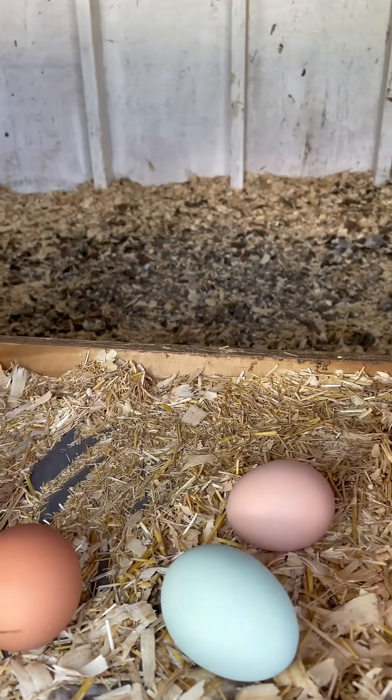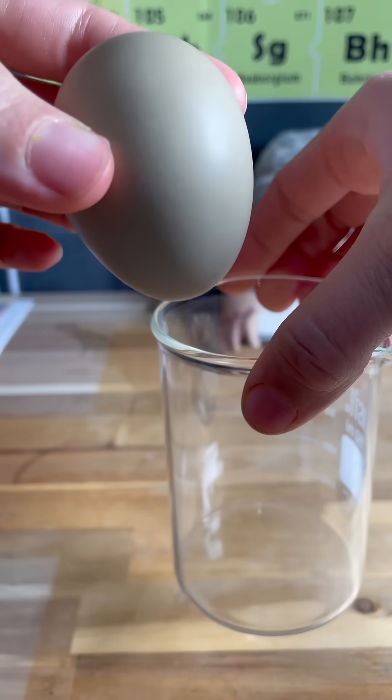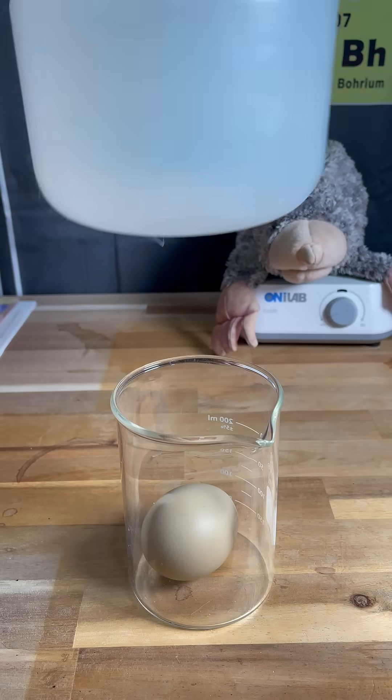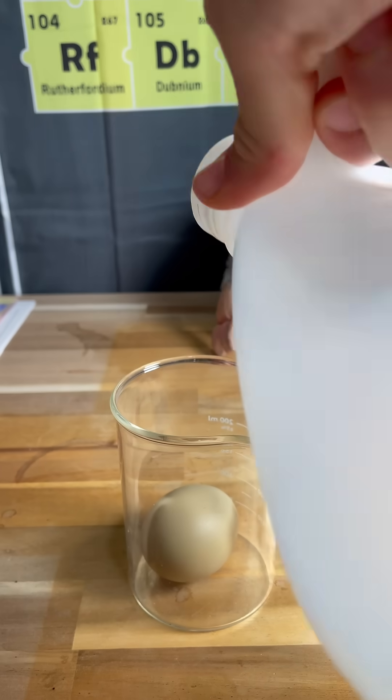Let's do some acid-base chemistry at home. All you need is an egg—any old egg will do. We just happen to have a lot of fresh eggs around here. You're just going to cover that in vinegar. This is just plain household vinegar. This bottle's a couple years old, but it does the job.